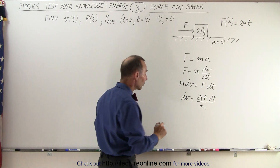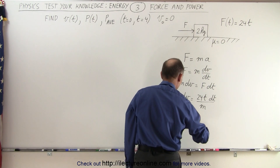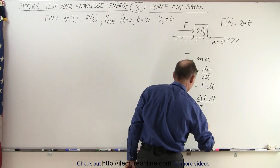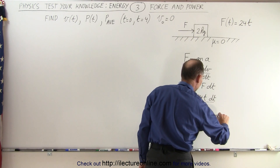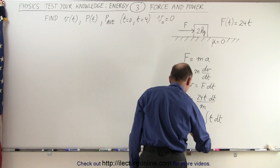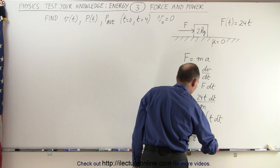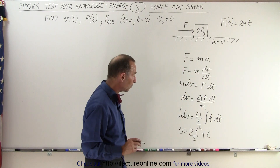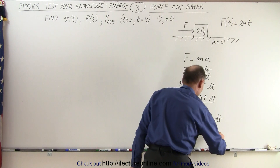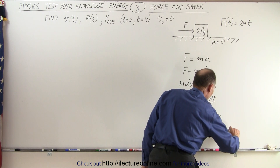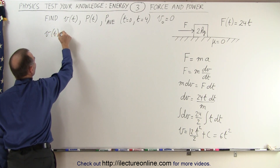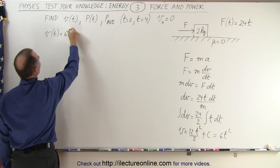If we integrate both sides, we get the integral of dV is equal to 24 over M — and M equals 2 kilograms, so we divide by 2 — times the integral of t dt. Integrating both sides gives V equal to 24 divided by 2, which is 12, times t squared divided by 2, plus a constant of integration. But when t equals zero, velocity equals zero, so the constant drops off. Therefore, V as a function of time is equal to 6t squared.